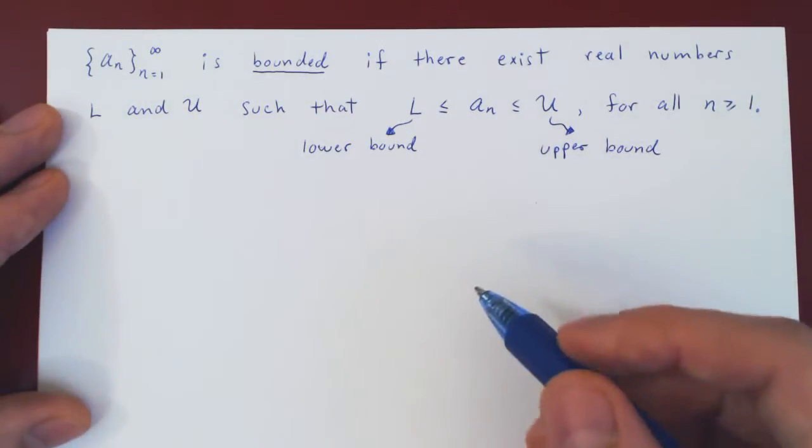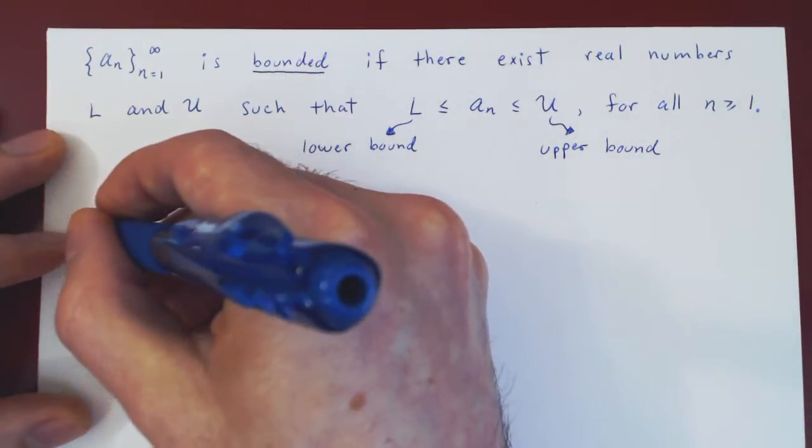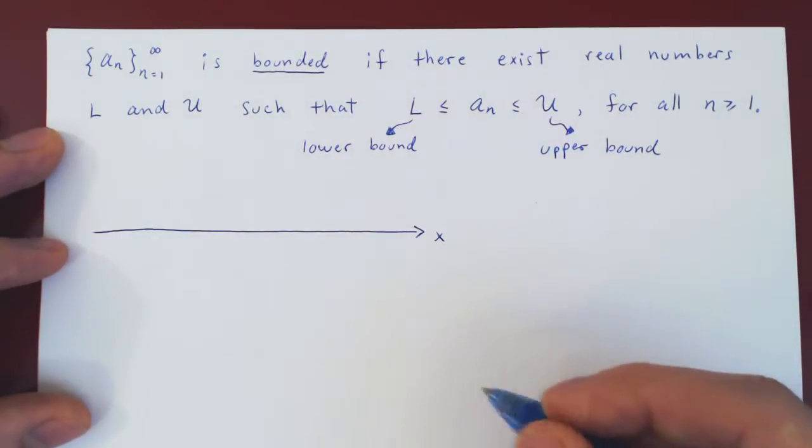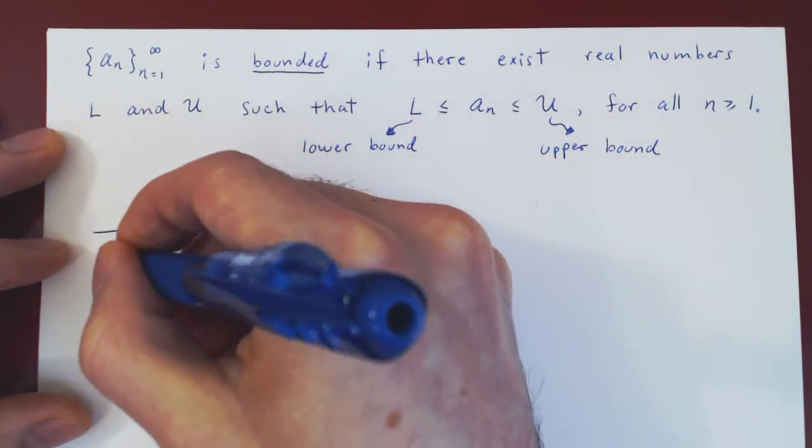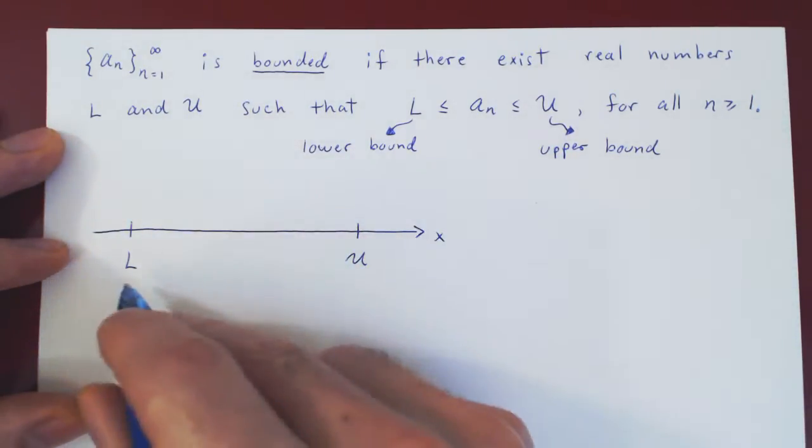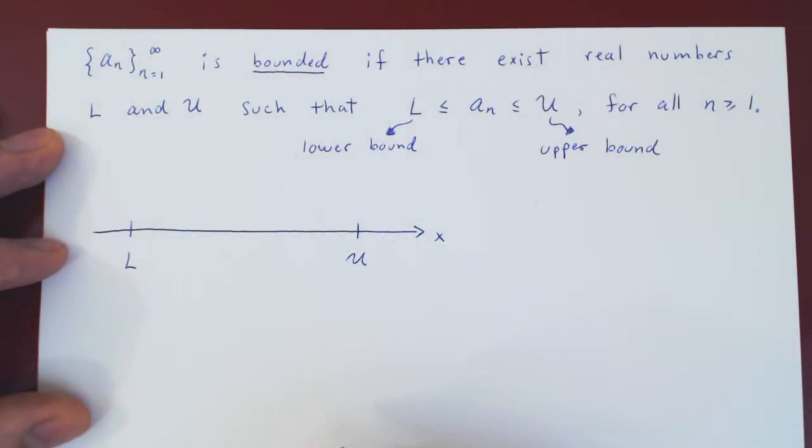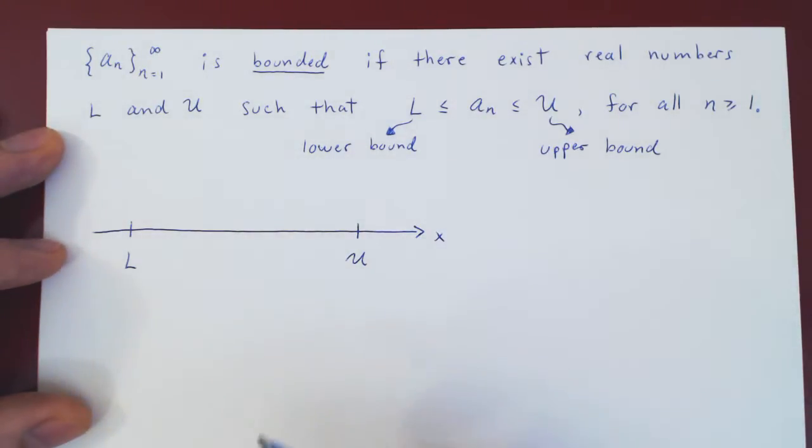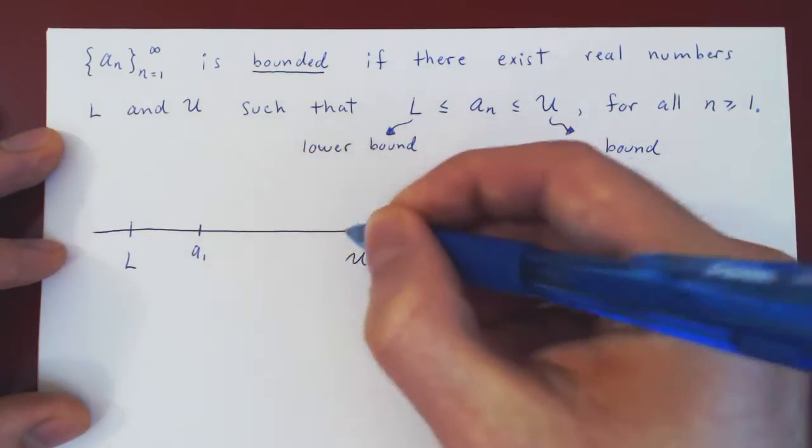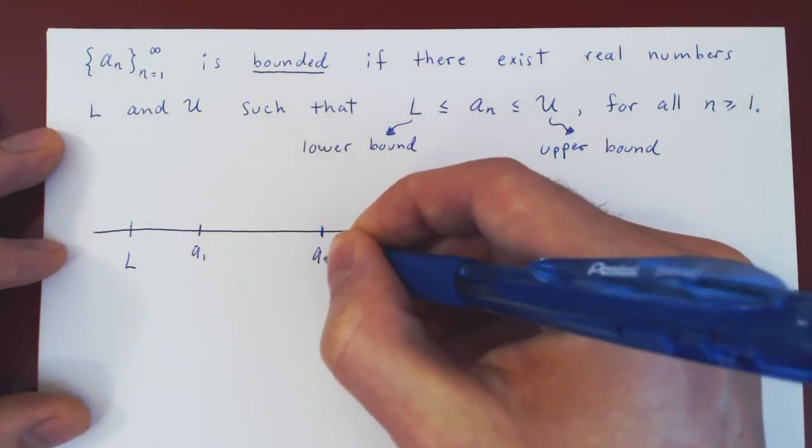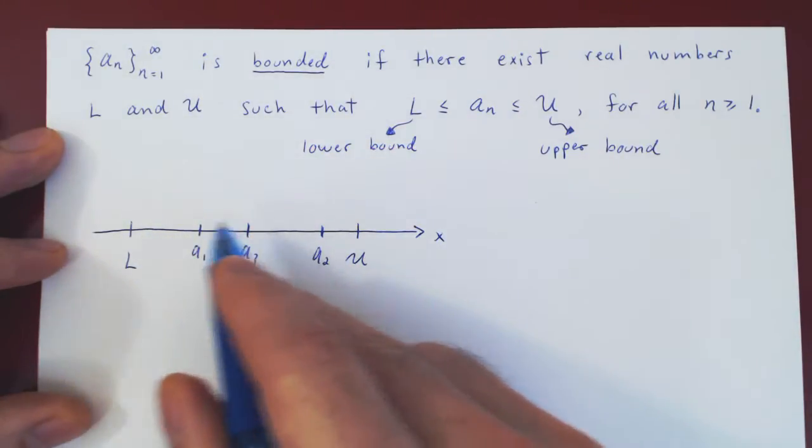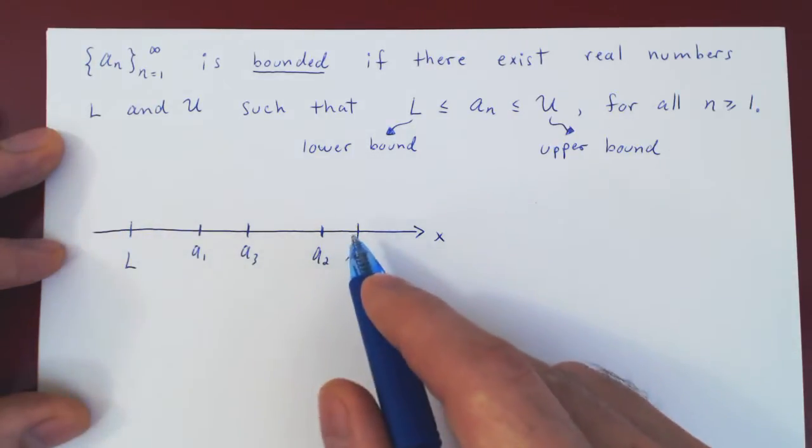And again, you can visualize this in two ways. If you visualize the sequence as a list of real numbers along the real axis, you can imagine this is L, this is U, so your lower and upper bound. And every term of the sequence must lie between these two bounds. So you can imagine a_1 being here, a_2 being here, a_3 being here, and so forth. So every single term of your sequence, whatever the value, will have to be between L and U.